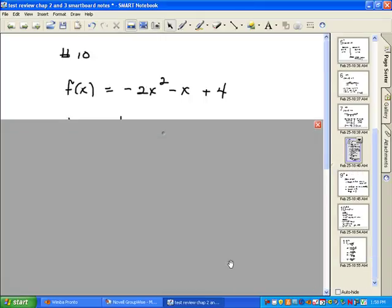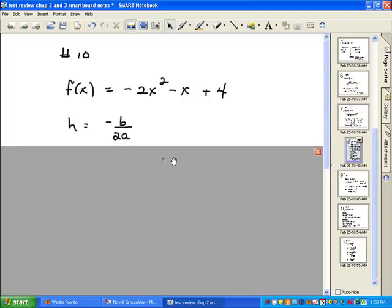This is number 10 on your review sheet. And what I've asked you to do is find the vertex, find the axis of symmetry, find the minimum and the maximum. If I look at this one and I want to find the vertex, I'm going to use the vertex formula. That's how I would do it algebraically. If you want, you can do it on your calculator.